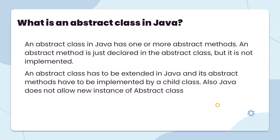What is an abstract class in Java? An abstract class in Java has one or more abstract methods. An abstract method is just declared in the abstract class but not implemented. An abstract class has to be extended in Java and its abstract methods have to be implemented by a child class. Also, Java does not allow creating a new instance of an abstract class.